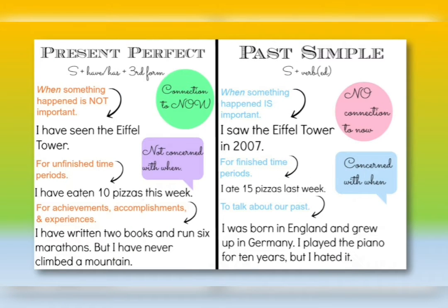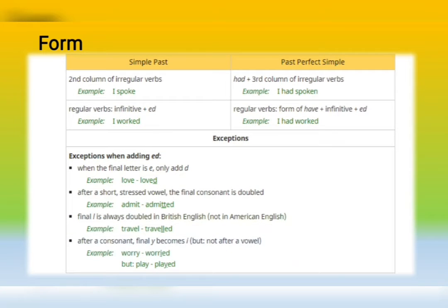The present perfect — we use it to talk about non-specific actions in the past or experiences. I have seen the Eiffel Tower. The past simple is specific: I saw the Eiffel Tower in 2007. What is the form? I'm combining the three tenses: past simple, present perfect simple, and past perfect simple.